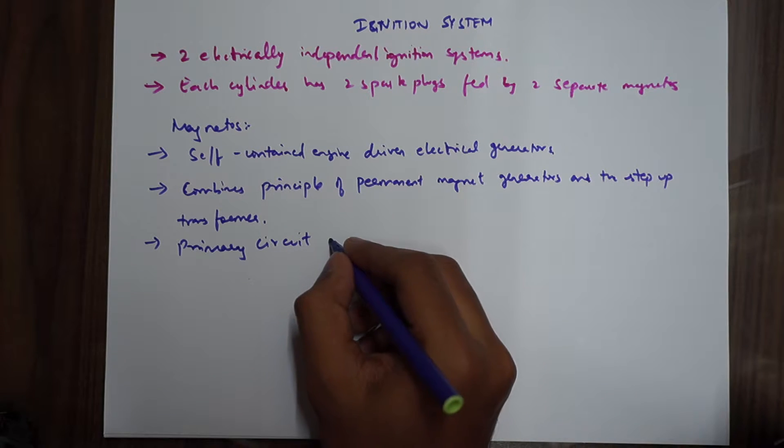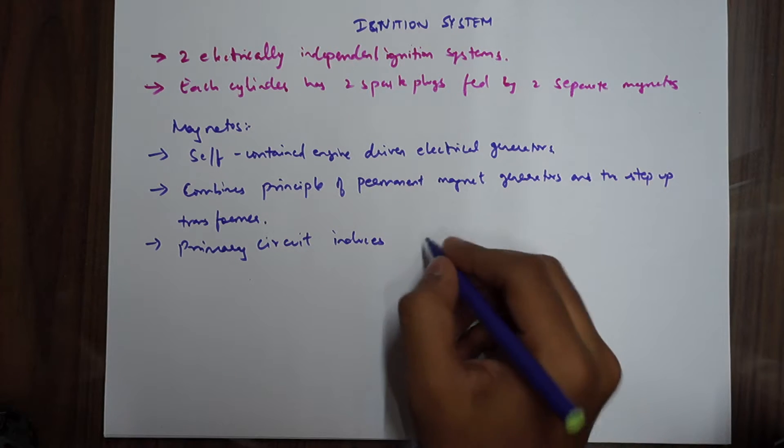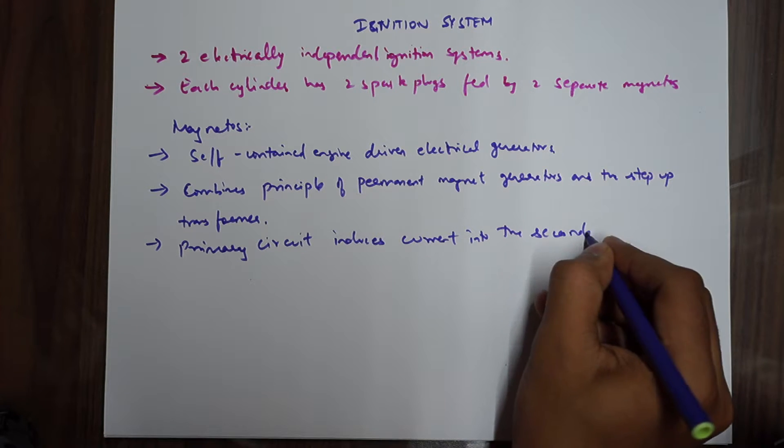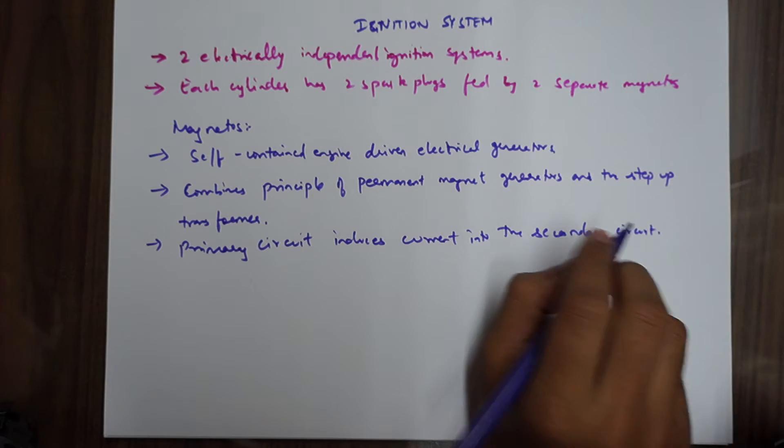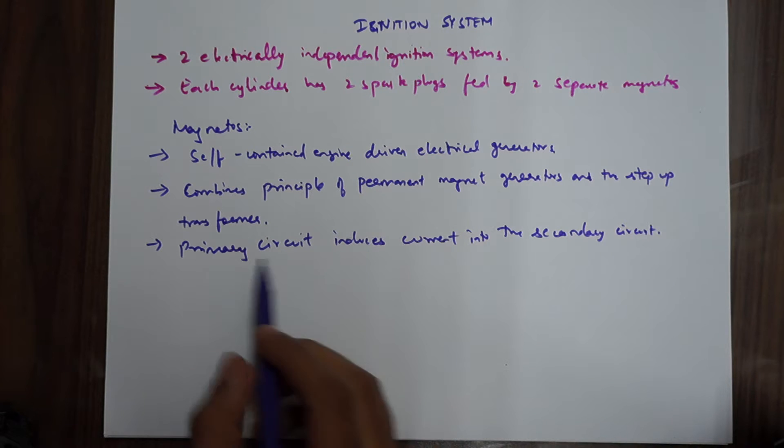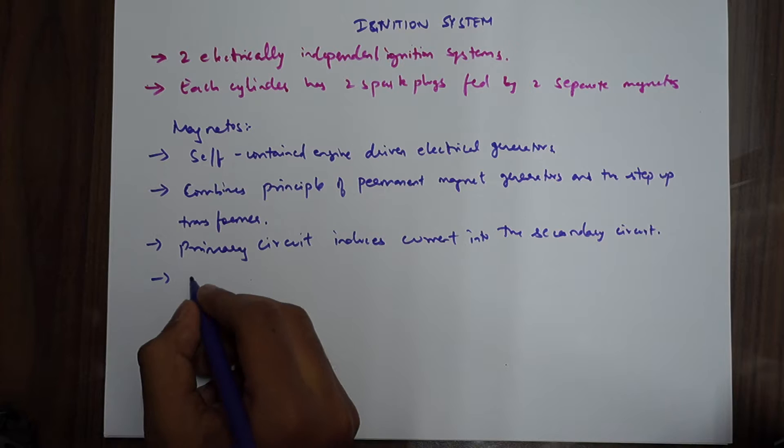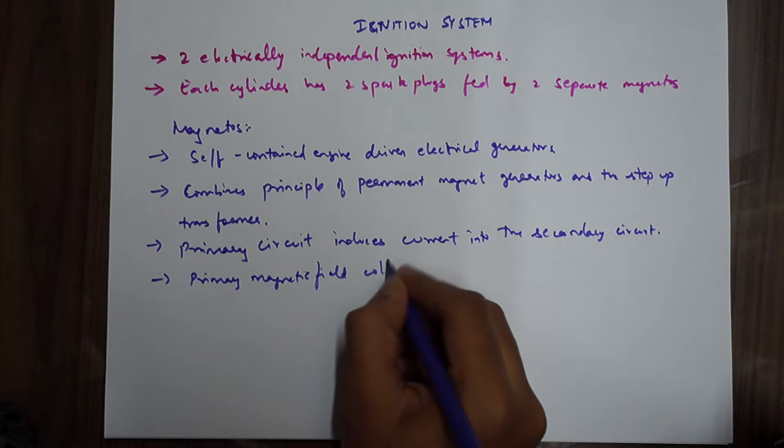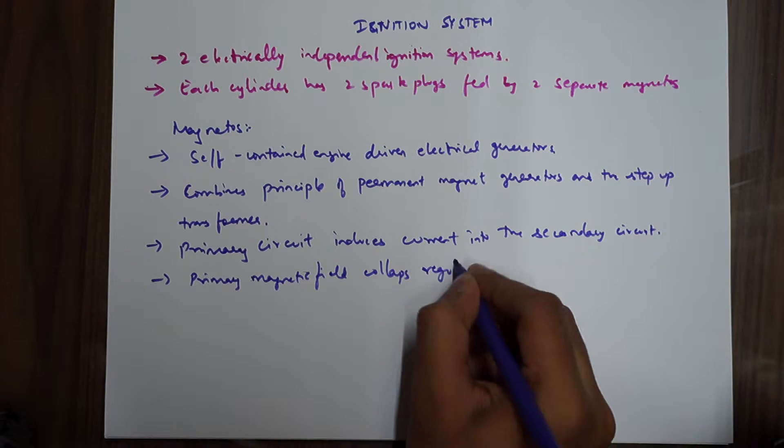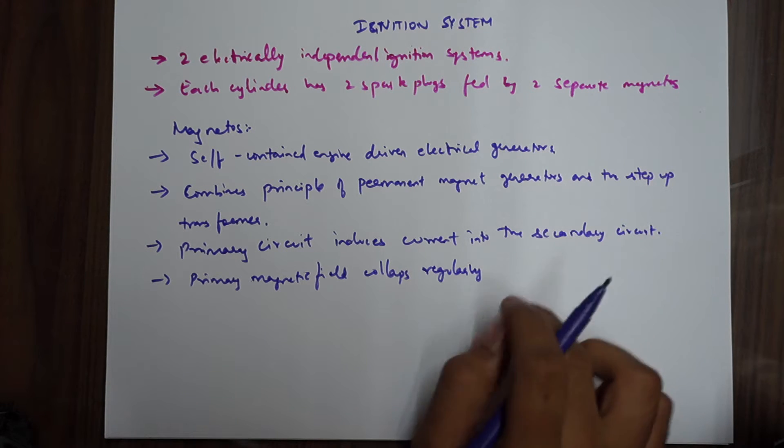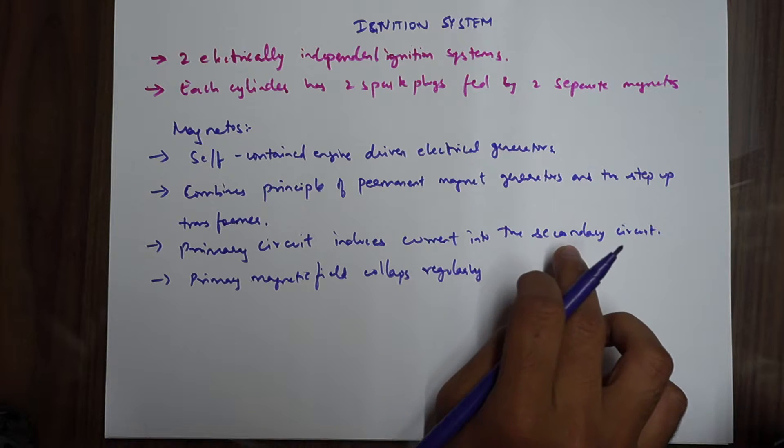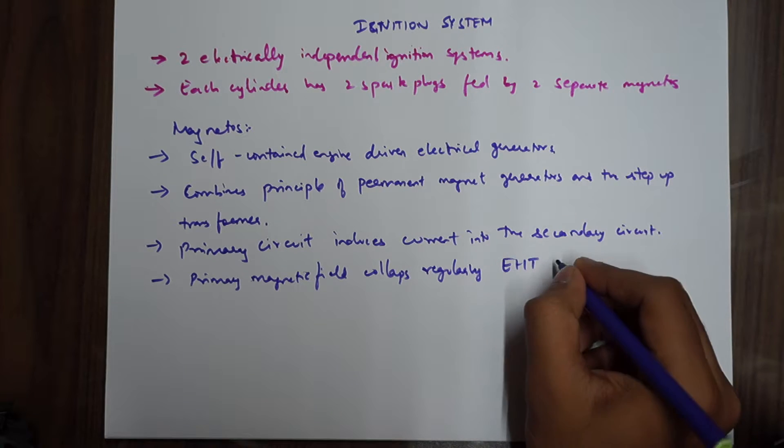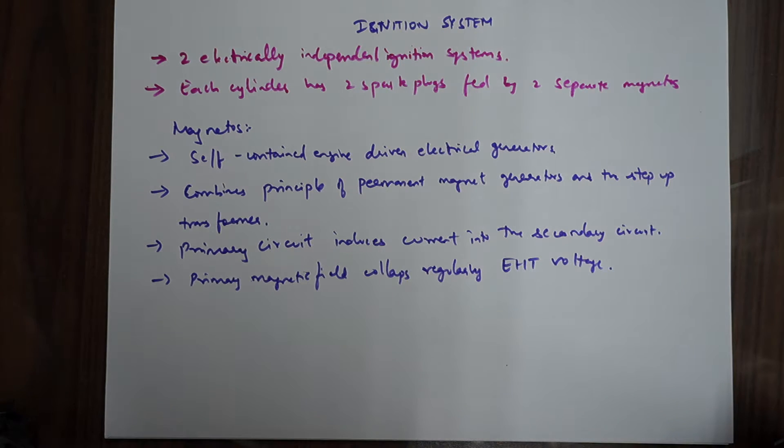This will obviously induce current. So the primary circuit works with the horseshoe magnet. That induces current into the secondary circuit. As the primary magnetic field collapses regularly, the lines of magnetic force caused in the primary circuit induces a current in the secondary circuit. This induces a high EHT voltage, extra high tension voltage into the circuit. This whole thing is called electromagnetic induction.